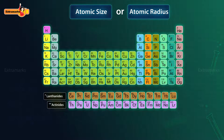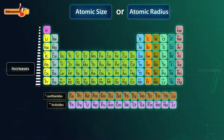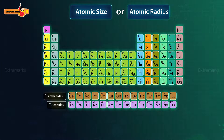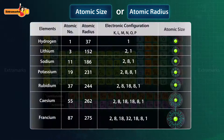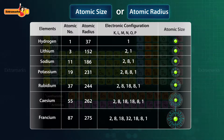As we move from top to bottom in a group, the atomic size increases. Let us take the example of group 1 elements. As we move from hydrogen to francium, the number of shells increases and hence the atomic size increases.